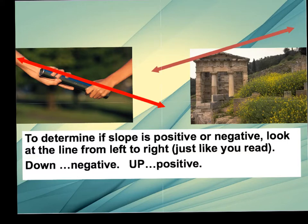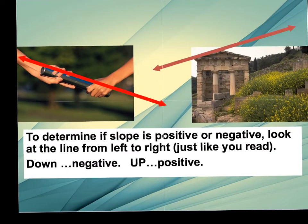To determine if slope is positive or negative, you look at the line from left to right, just like you read. So we read on the left, and if we were to read this first line, we'd read from here and go all the way down. Therefore, our slope is going to be negative.